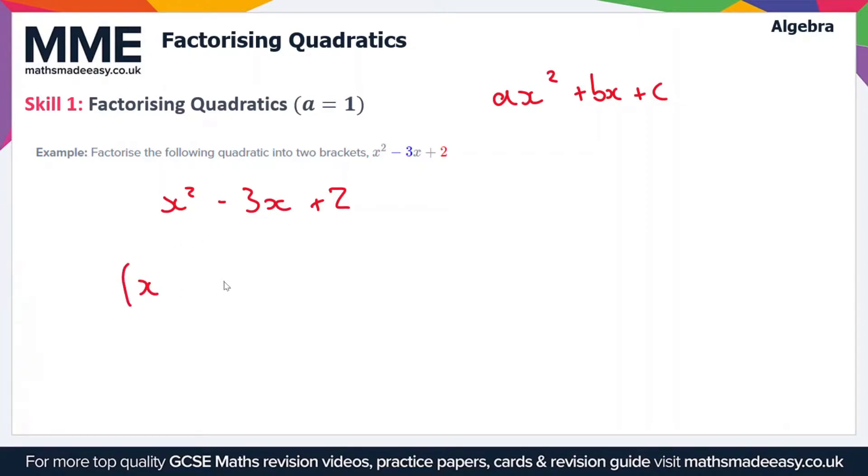We need two numbers which multiply to give positive 2 and add together to give negative 3. If they multiply to give a positive number but add to give a negative number, then both must be negative. So we're going to have x minus something in each bracket. This is subtype B from the first video.